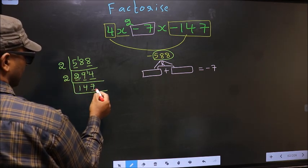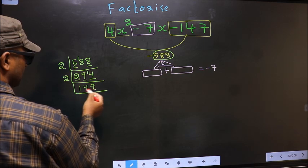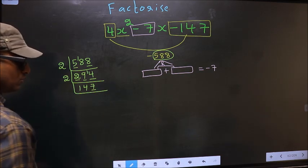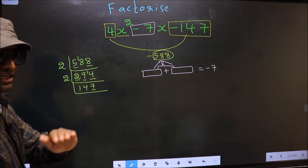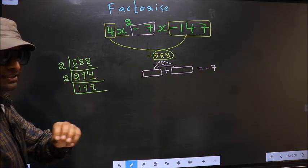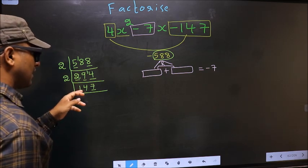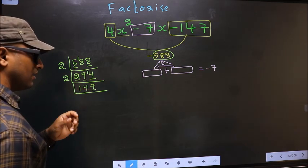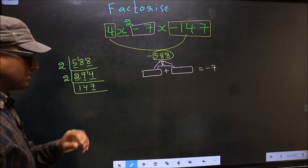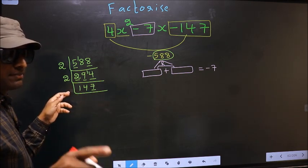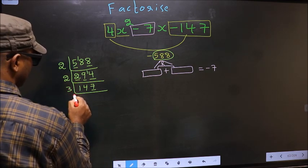Now here, last digit 7, not even, so this number is not divisible by 2. Next prime number is 3. To check divisibility by 3, we should add the digits. That is 1 + 4 + 7, we get 12. Is 12 divisible by 3? Yes. So this number is also divisible by 3. So we take 3 here.